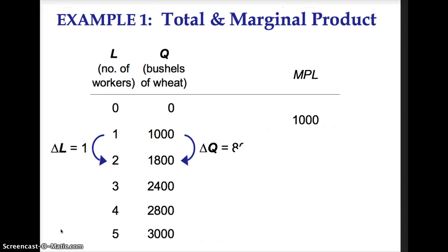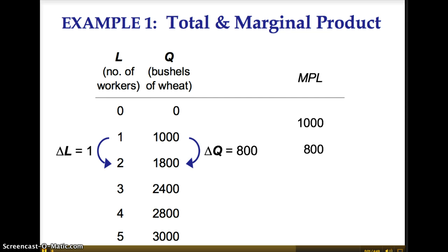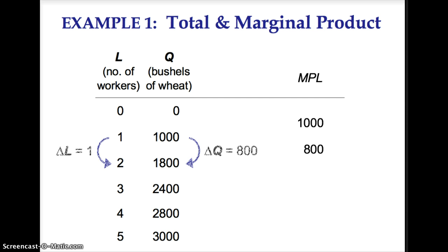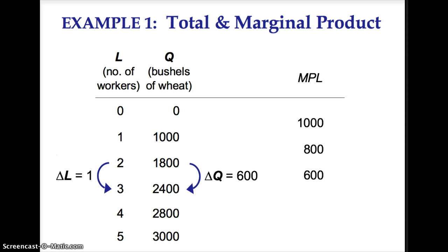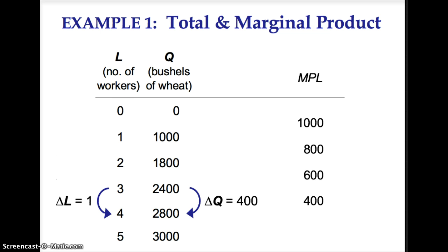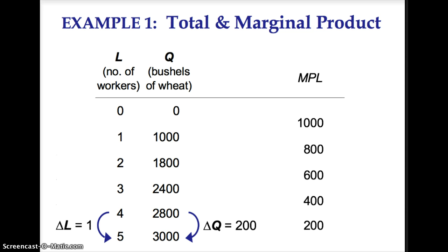Again, when the quantity of labor changes by one unit and the quantity of output changes by 800, the marginal product is 800 bushels. You continue using the same formula to fill in the rest of the table. The marginal product of labor is the change in quantity divided by the change in labor.